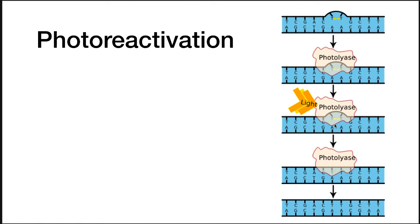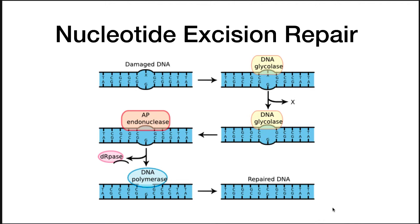If a base somehow changes because of natural decay, modification by chemicals, or by radiation, this damaged base can be removed — this is called nucleotide excision repair. The nucleotide is first recognized by DNA glycolase, because it forms a bubble in the DNA. It removes the base and falls off. AP endonuclease comes in, clips out that region, and then DNA polymerase comes in and repairs it.